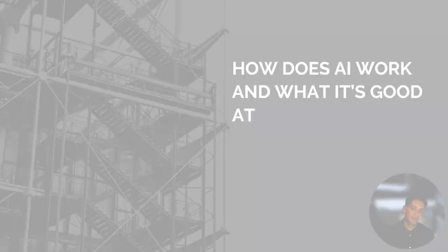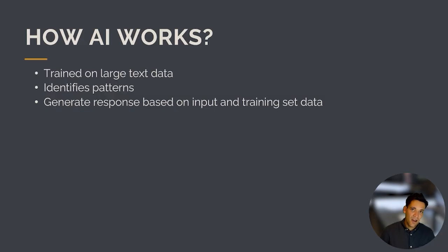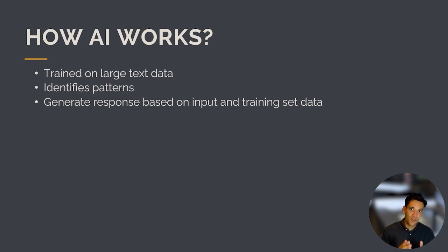Let's get started with how does AI work and what is it good at? At a high level, AI is a predictive modeling tool. It's trained on a huge amount of data. It identifies patterns and then predicts the next most likely thing based on the training set of data.